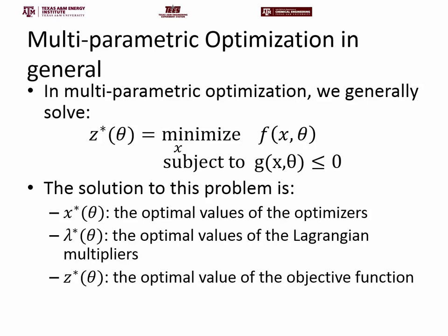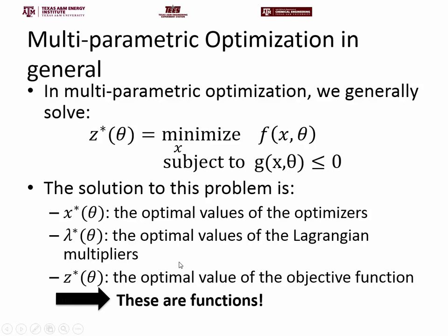This is where all the complexity of multi-parametric programming comes in, because everything we normally do in optimization for points now suddenly has to hold over dimensions higher than zero. The solution is x star of theta — the optimal optimizers as functions of theta — lambda star of theta, the optimal Lagrangian multipliers, and z star of theta, the optimal objective function value. These are functions, not numbers, and obtaining those functions is the crucial part of multi-parametric programming.